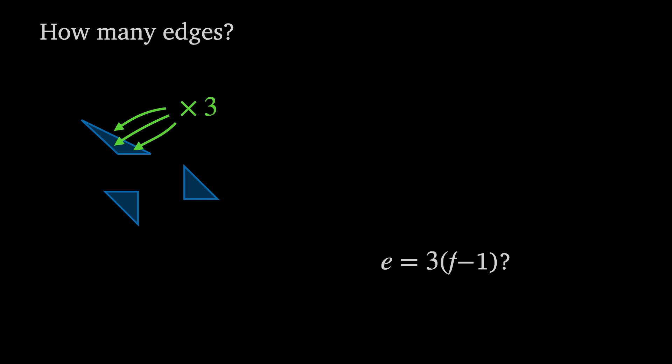To do that we need to know the number of edges in the polygon so we can input that into Euler's formula. Luckily there's an easy way of doing this. Consider a triangulated lattice polygon. How many edges are there? Well if we break the polygon into its individual triangles we find three edges per triangle. This implies that the number of edges might be something along the lines of three times f minus one.